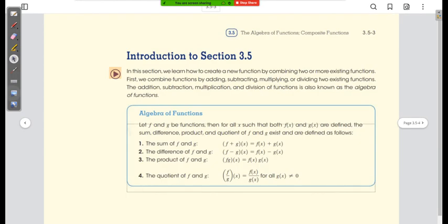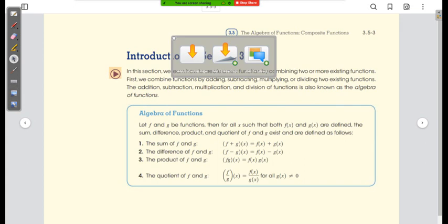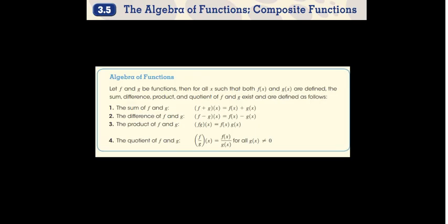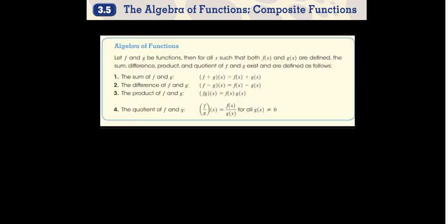So the algebra of functions — basically when we say algebra, we're talking about solving for unknowns. When we talk about the algebra of functions, we're talking about combining our functions, our unknowns, and getting the sum, difference, product, and quotient.